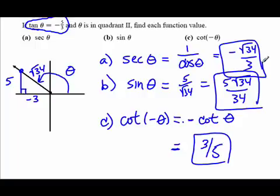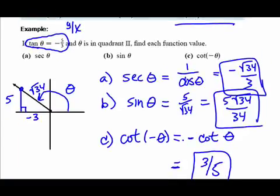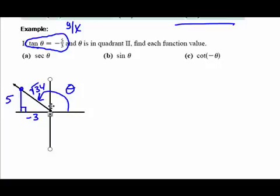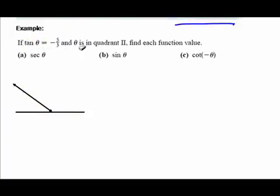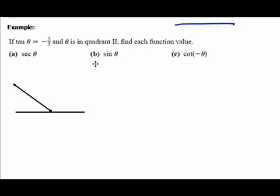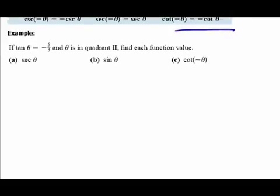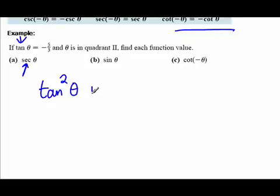Now let's revisit part A using a Pythagorean identity instead of the triangle. Is there a Pythagorean identity that ties tangent with secant? Yes: tangent squared theta plus one equals secant squared theta. We know tangent theta is negative five-thirds, so we substitute: negative five-thirds squared plus one equals secant squared theta.